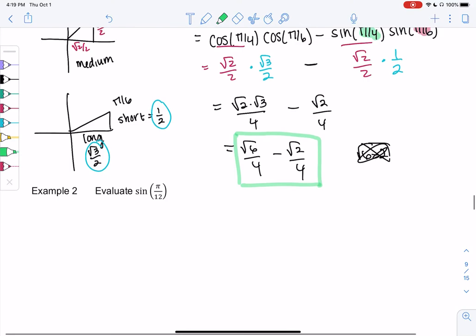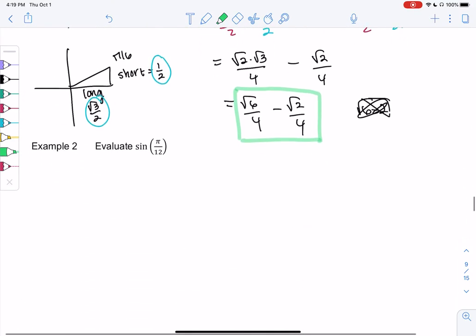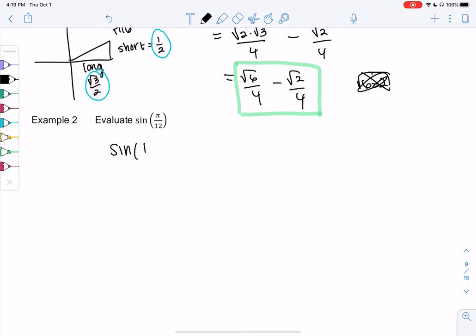Let's try sine of pi over 12. So we'll use a similar identity for pi over 12. So I'm going to try to rewrite it as two angles that we know better. So I'm thinking subtraction will work better here, because pi over 12 is so small.